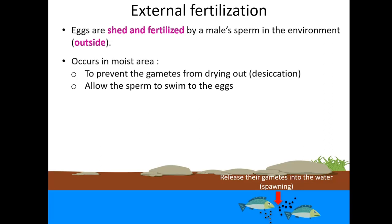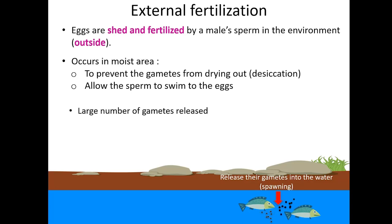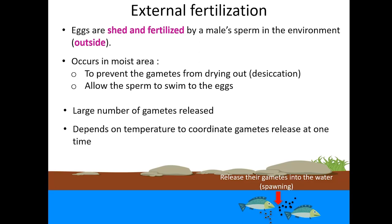This process is known as spawning. The spawning process causes the egg and sperm to be placed in a small area, enhancing the possibility of fertilization. At the same time, a large number of gametes also need to be produced by both male and female to ensure reproductive success.